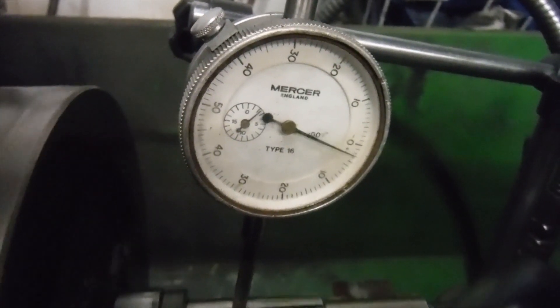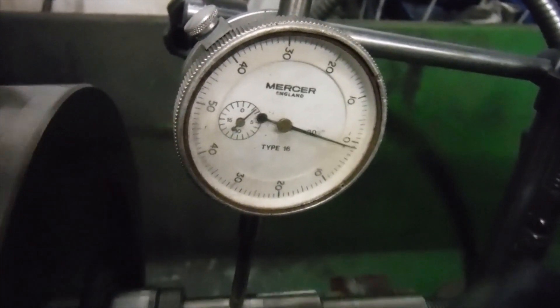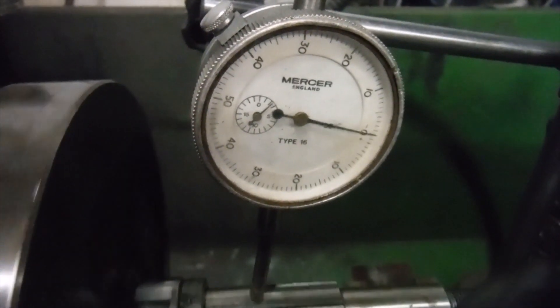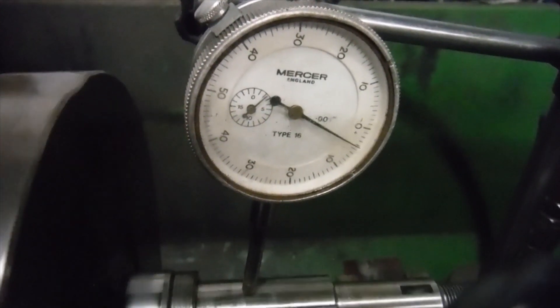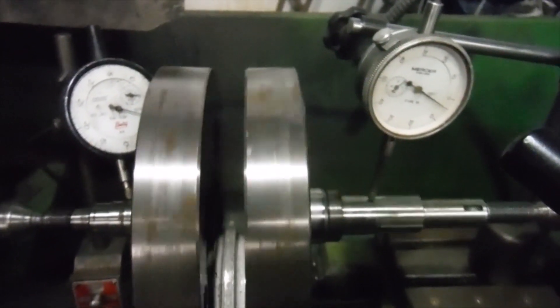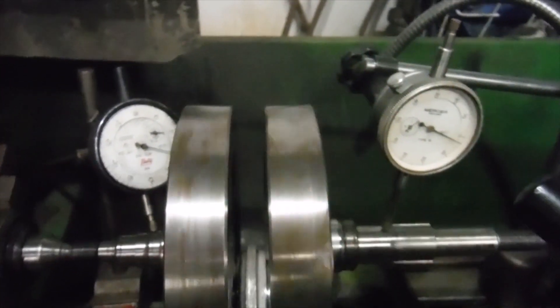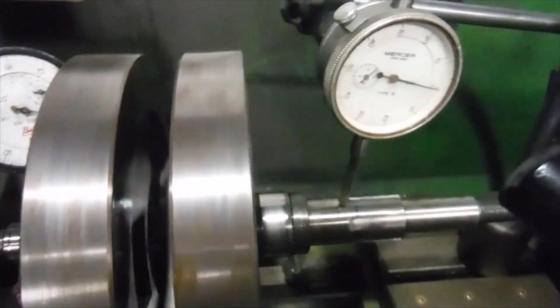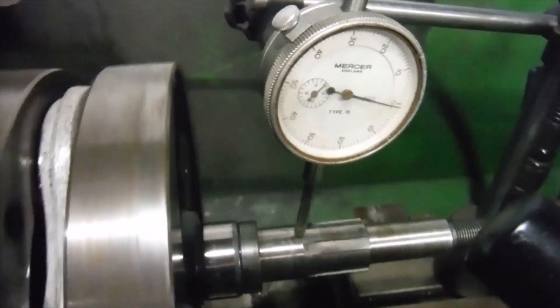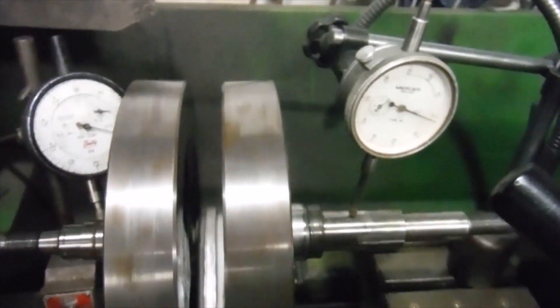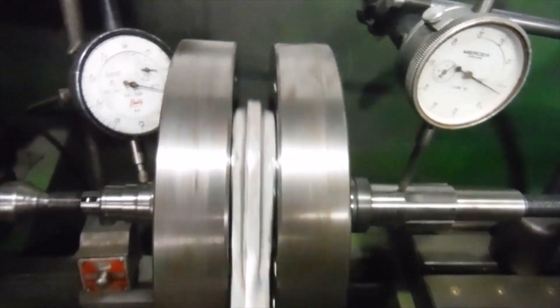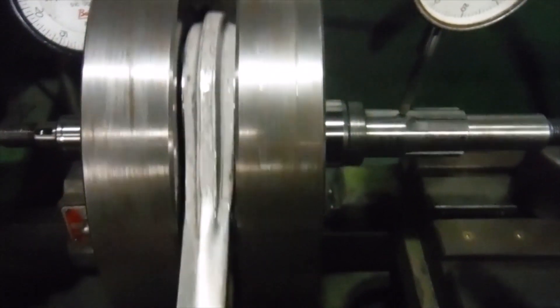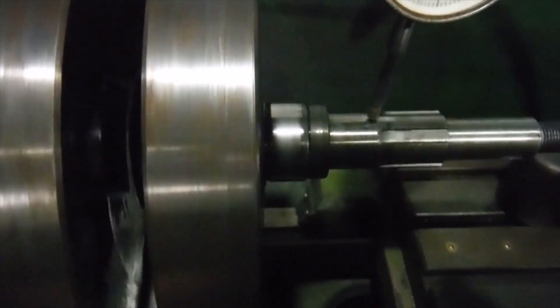We've got four thousandths of an inch on the drive side, which I've seen worse. The rise and fall is not quite at the same time but not far off, so I certainly wouldn't add that one thousandth to the four thousandths, but we'll say that it's got four thousandths run out. That's tolerable but not perfect.